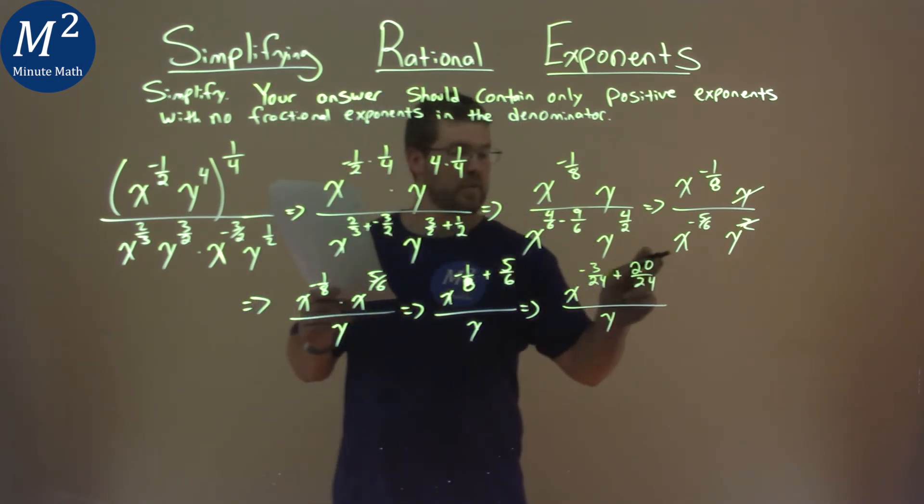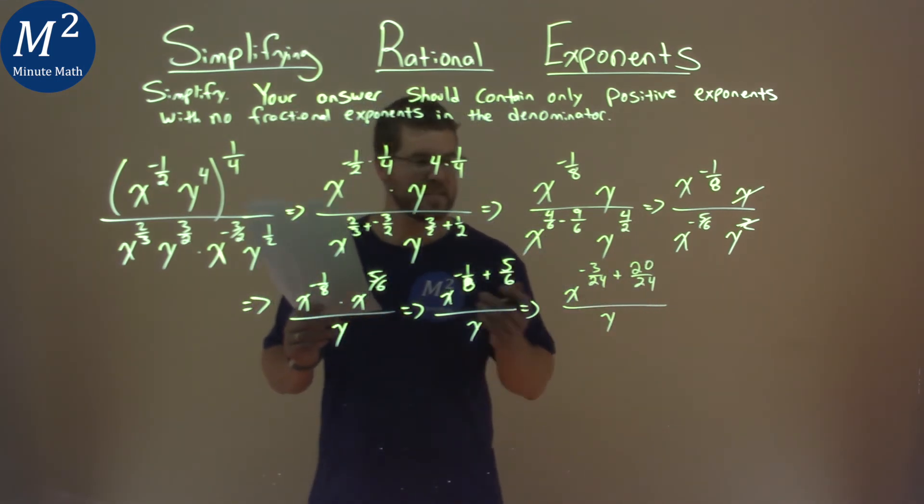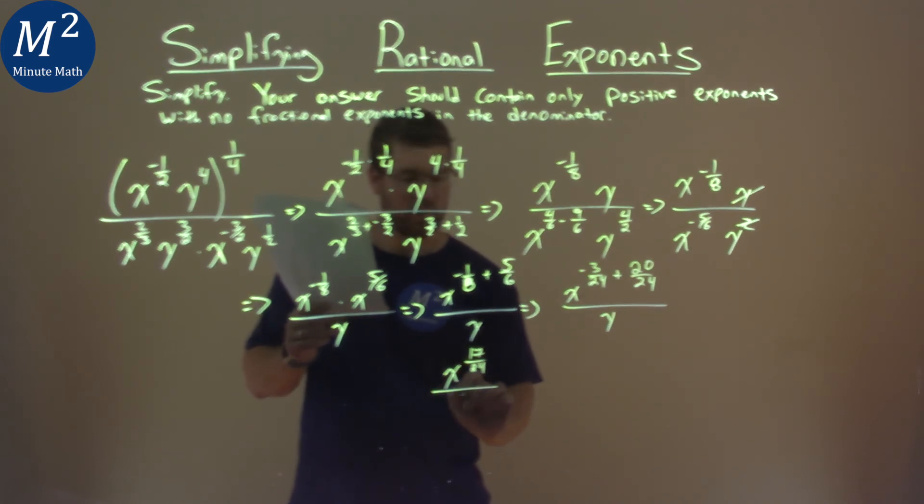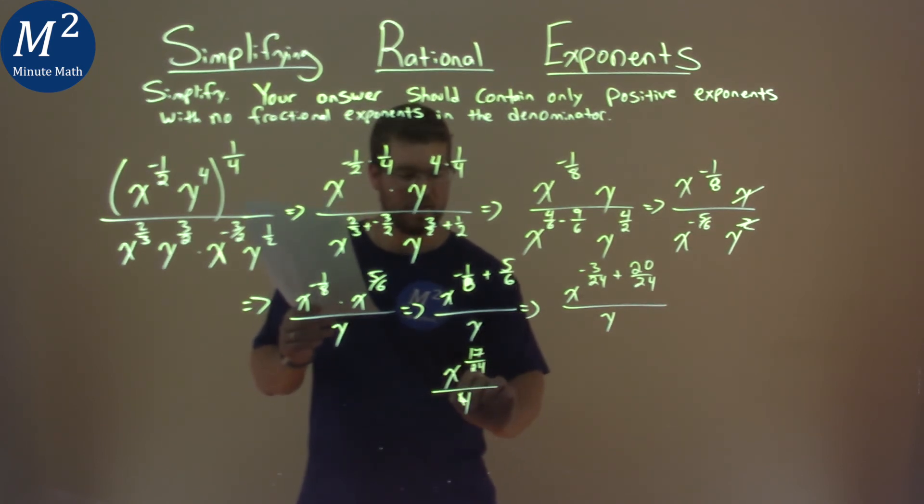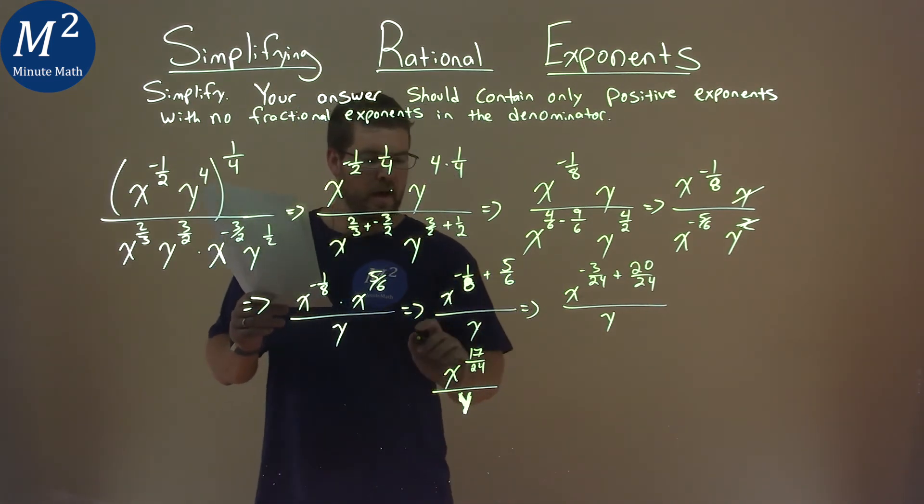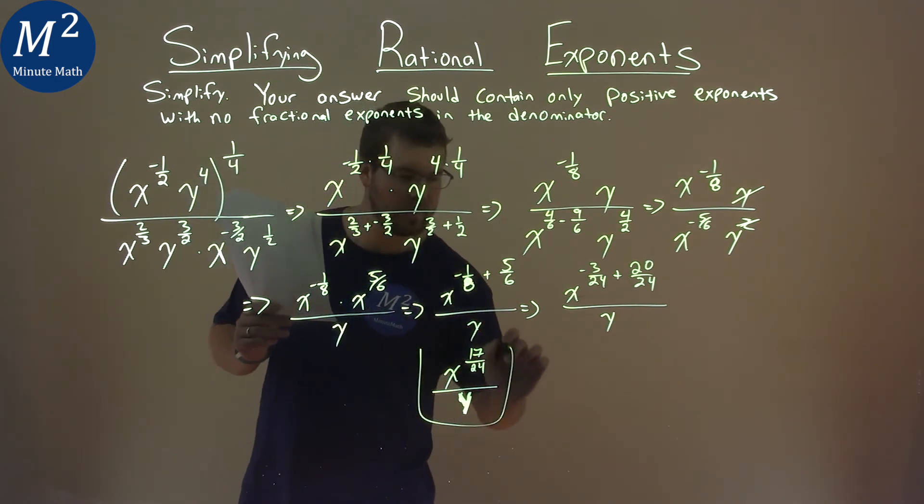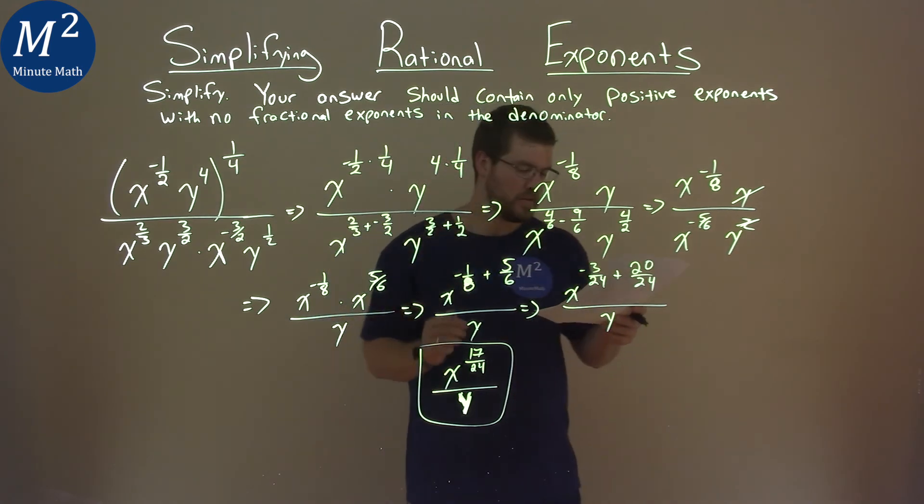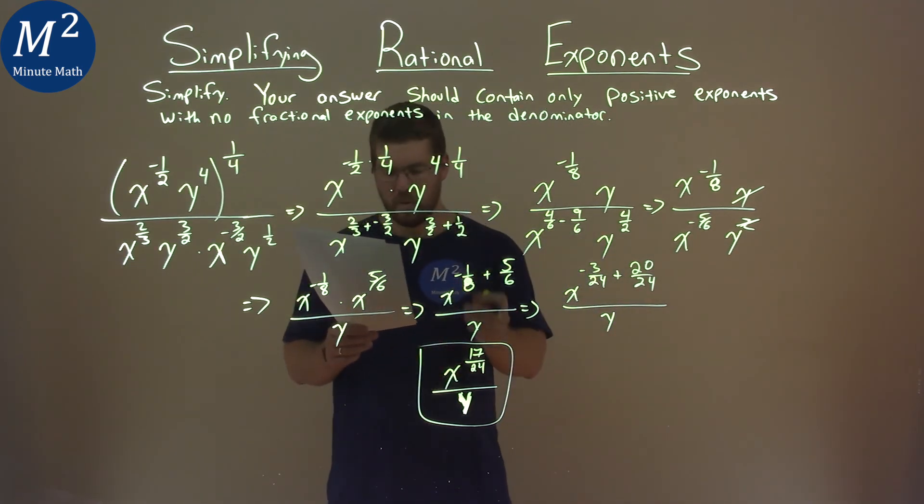Combining that together, 20 minus three is 17, so we have x to the 17 over 24 power. And our final answer here is just x to the 17 over 24 power over y.